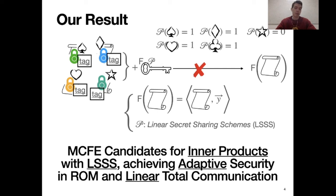We propose MCFE candidates for inner products with access control through LSSS, achieving adaptive security in the random oracle model and linear total communication. This improves upon prior works which focused either on single client schemes or had quadratic total communication.